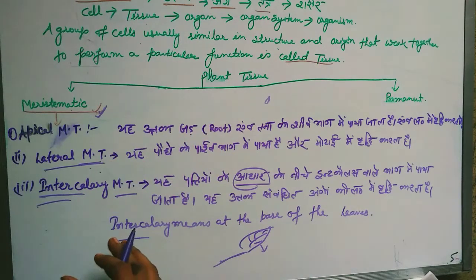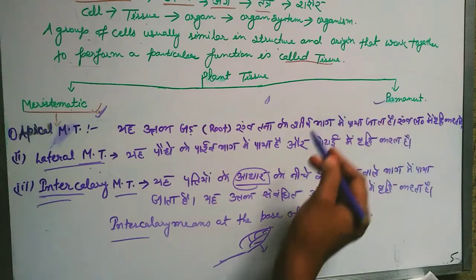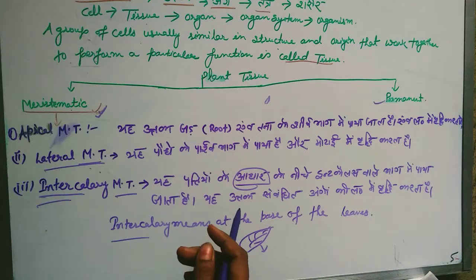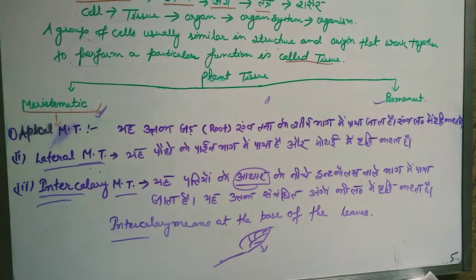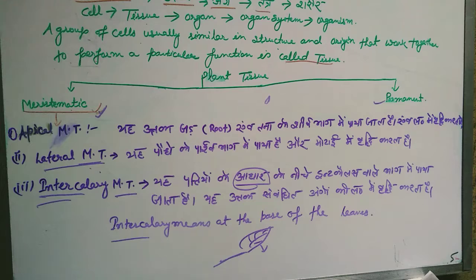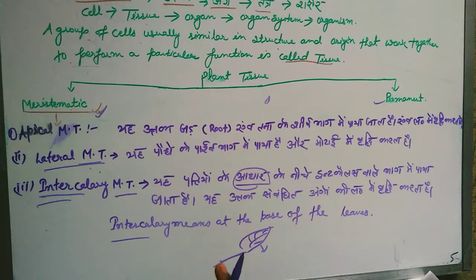Now, what is the work of Permanent Tissue? There are two types of permanent tissue: Simple Permanent Tissue and Complex Permanent Tissue. Simple permanent tissue consists of mature cells with thin to hard cell walls, which are not capable of cell division.